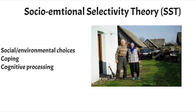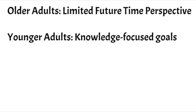With socio-emotional selectivity theory, the main point is that older adults see their life differently than younger adults, and because of that they have a different perspective. This is labeled limited future time perspective. The idea is that older adults see their life with only so much time left, and because of that they want to attend to the things that matter to them the most. Whereas younger adults see their future time as being a lot longer, so they have more time to focus on other things.